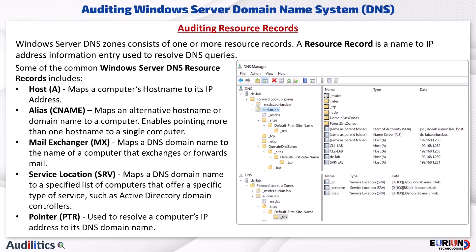Windows Server DNS zones consist of one or more resource records. A resource record is a name-to-IP address information entry used to resolve DNS queries. Some of the common Windows Server DNS resource records include the host or A record, which enables mapping of a computer's hostname to its IP address.